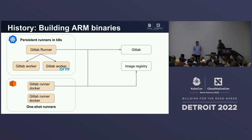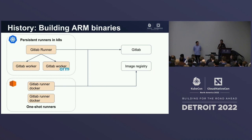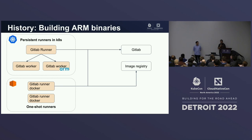The next step in this journey is that some customers were starting to ask us for ARM binaries, because we provide the Datadog agent that people use for monitoring, and people were starting to use ARM CPUs, so we needed to provide them with ARM binaries. Because we're running on Kubernetes, we set up Kubernetes nodes with ARM CPUs and were running builds on these nodes to get native builds.